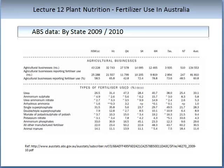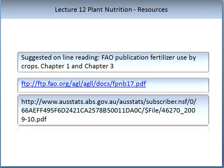In this table you can see not only the breakdown of use in the different states, but also what types of fertiliser are used. Urea is the most popular. If you would like further information on mineral nutrients, the FAO publication Fertiliser Used by Crops, Chapters 1 and 2, makes an excellent read and can be obtained free of charge from the internet link provided.